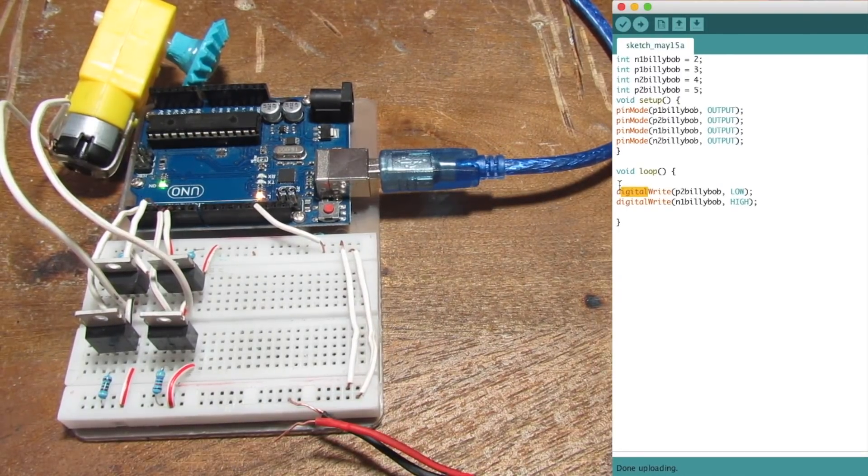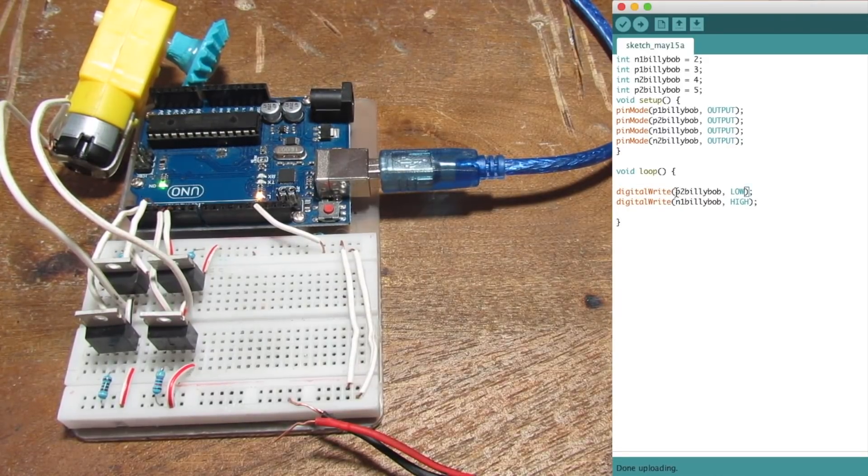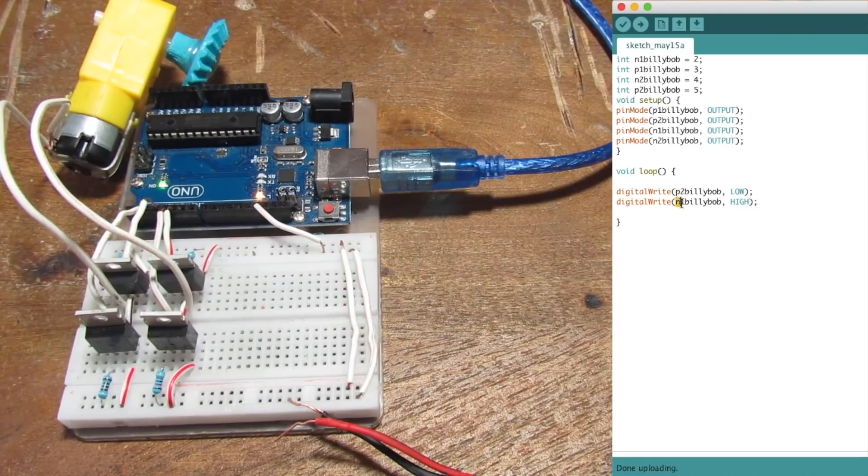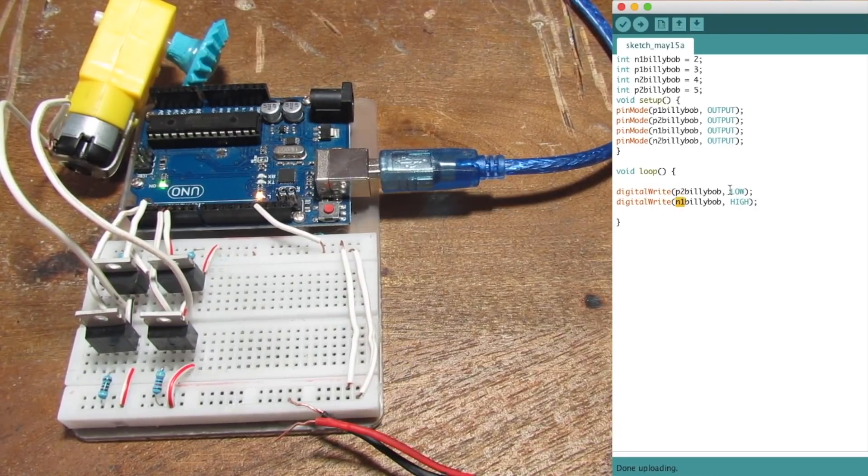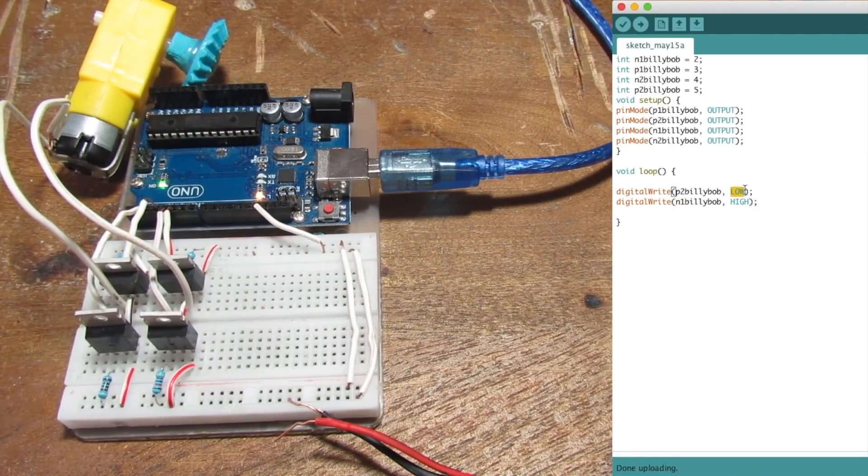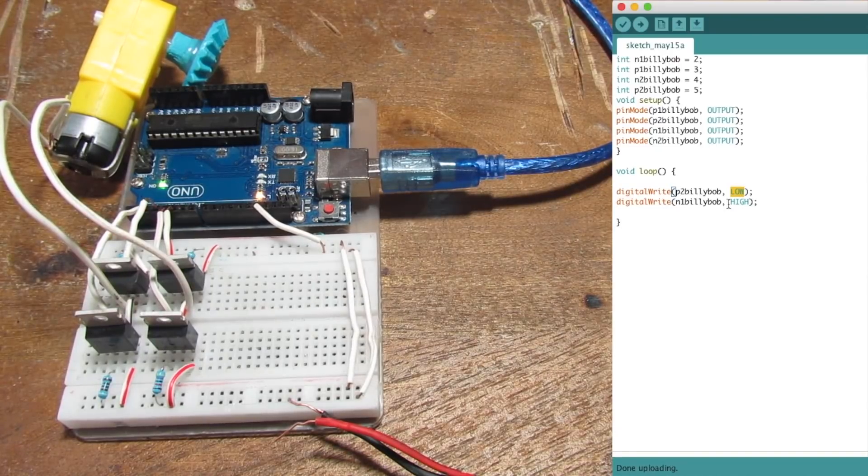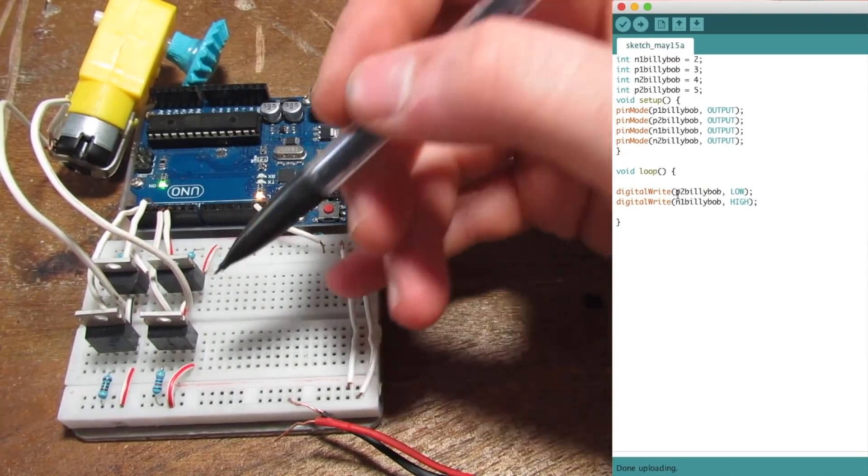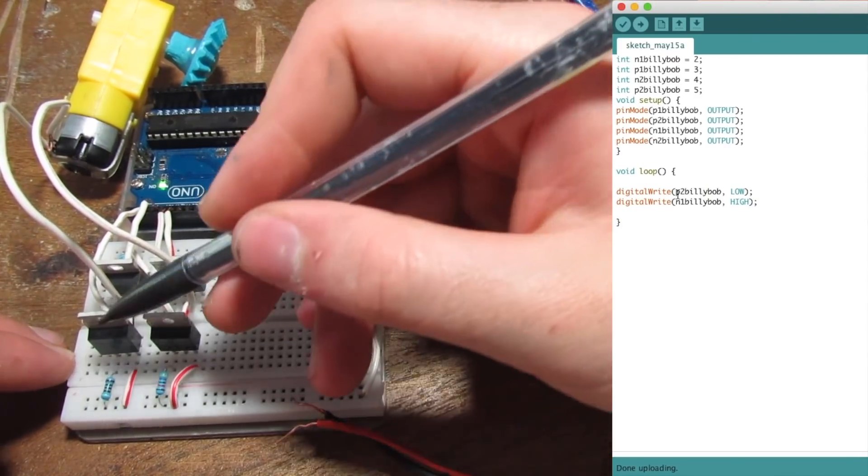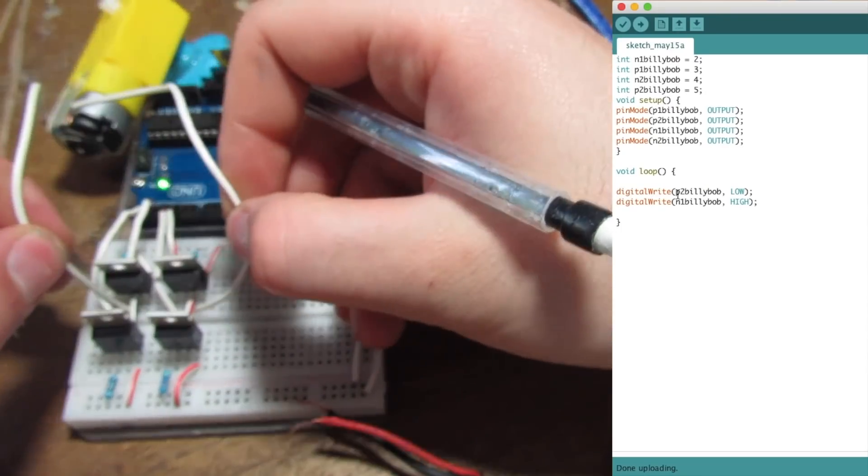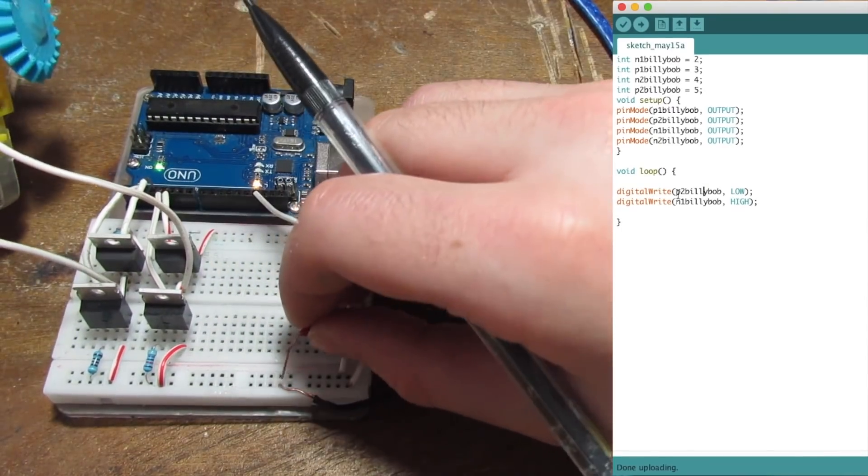So here in the loop I have two digital write functions. The first is for P2, that is P channel MOSFET 2, and N channel MOSFET 1. So P channel MOSFETs are activated by a low signal and N channels are activated by a high signal. So right now I'm turning on P2 which is this one and N1 which is this one. So let's see what happens.